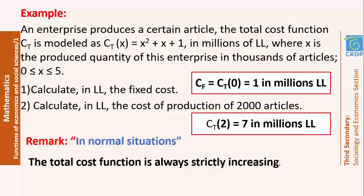Note that in normal situations, the total cost function is always strictly increasing. Logically speaking, if we are producing one item, the total cost will not be equal to the cost of producing 100 or 1,000 items. So, the more items we are producing, the more cost we have to pay.